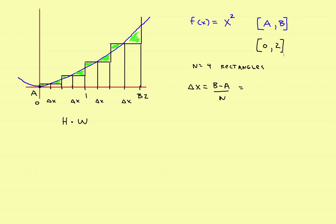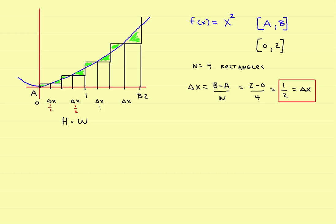So in this problem, b is equal to 2 and a is equal to 0, so it'll be 2 minus 0 divided by 4, which would be 1/2. So delta x will be 1/2. That means the width of each rectangle will be 1/2, so this one is 1/2, this one is 1/2, this one is 1/2, and this is 1/2.